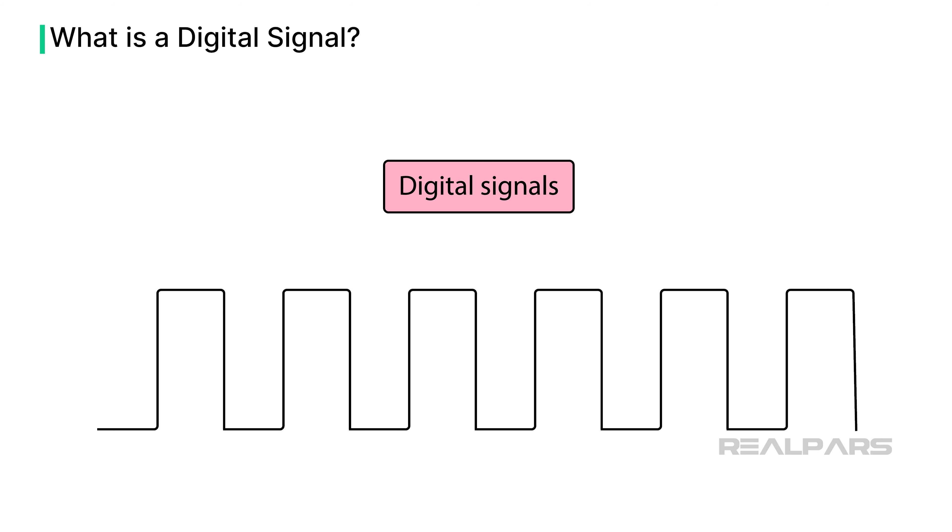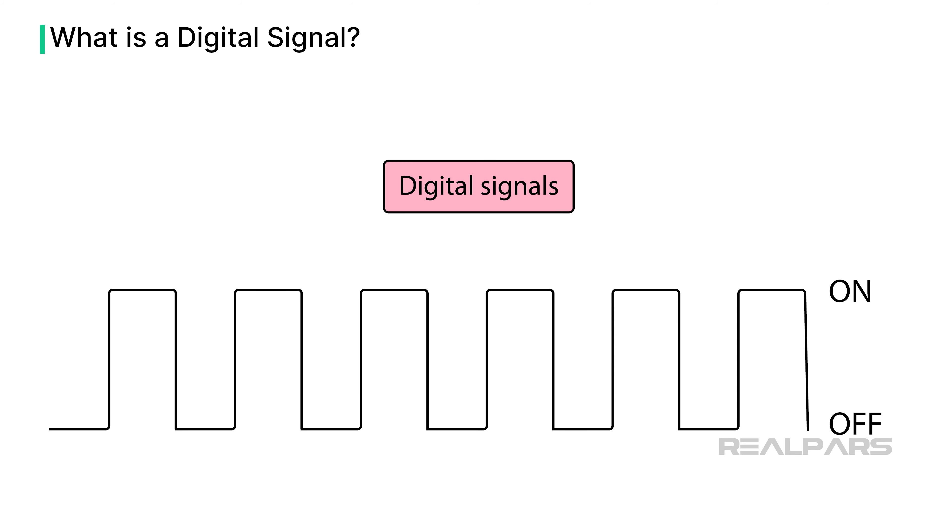The digital part is easy. A digital signal has only two possible conditions. On or off. Yes or no. Up or down. 1 or 0.